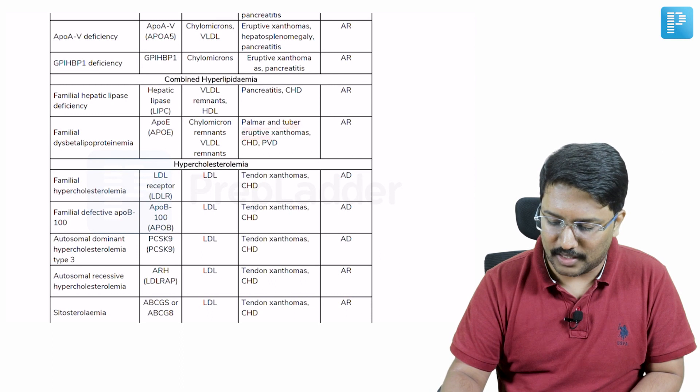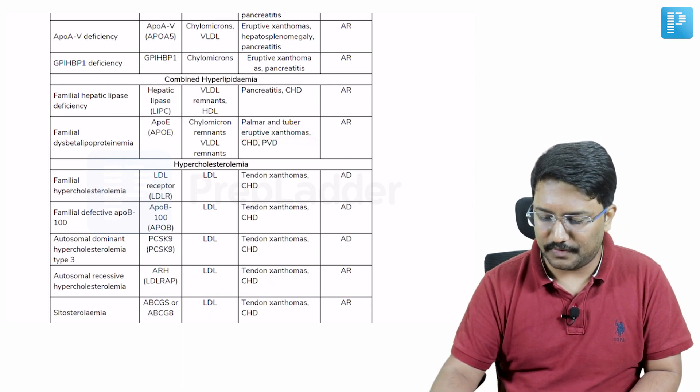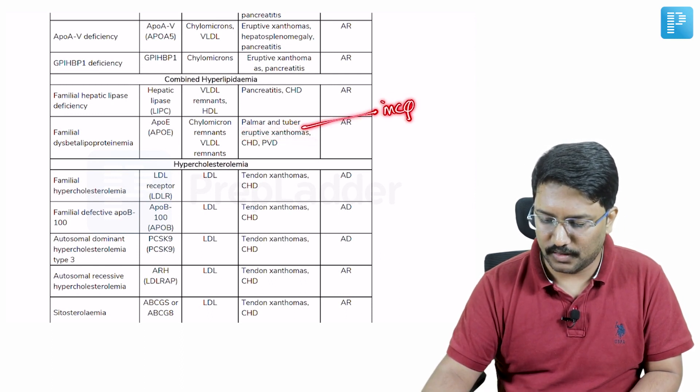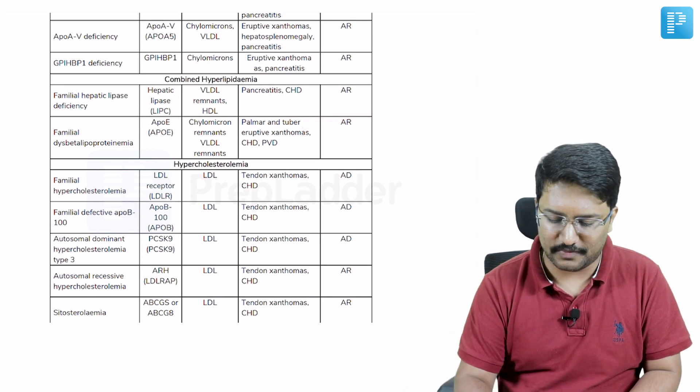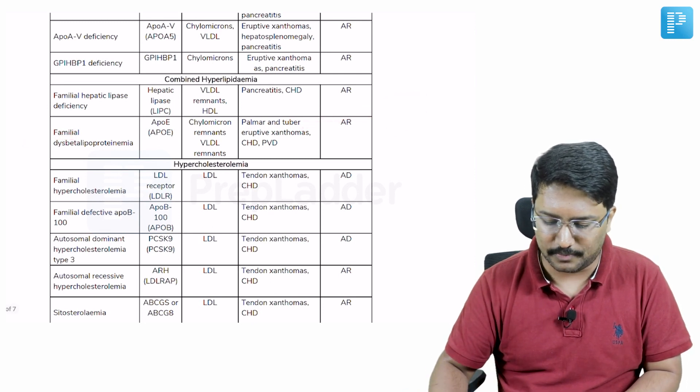In case of familial dis-beta lipoproteinemia, you might have palmar and tuberoereptive xanthomas. That itself is an MCQ. Where do you see tuberoereptive and palmar xanthomas? Familial dis-beta lipoproteinemia.